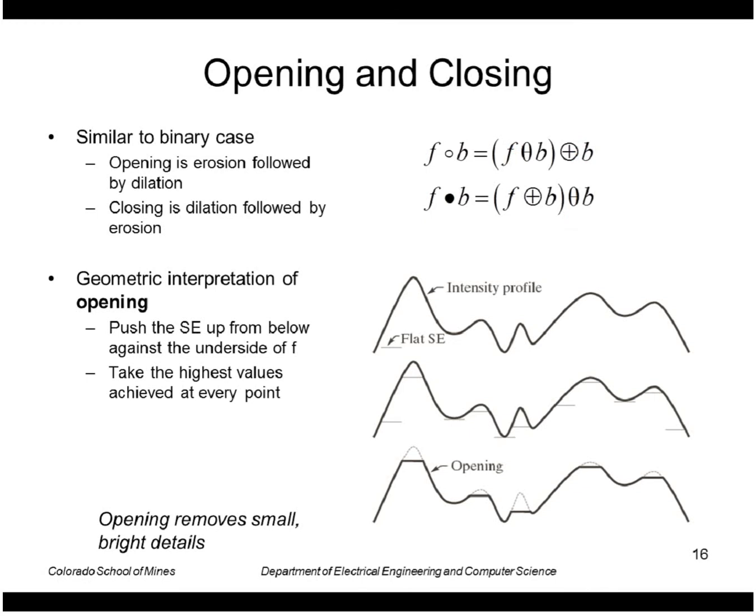Just like we had an interpretation in the binary case, we have an interpretation in the grayscale case. Opening says push the structuring element up from below, take the highest values achieved at every point. For example here on this profile this is the highest that the structuring element can go and we take the union of all those. So we essentially get back the same curve but we've removed small bright details.